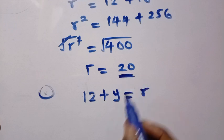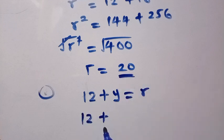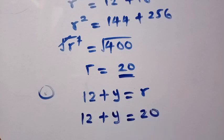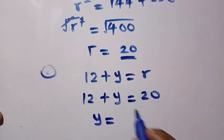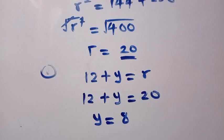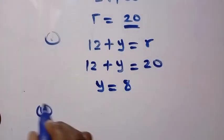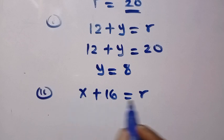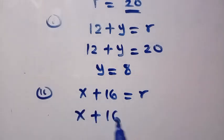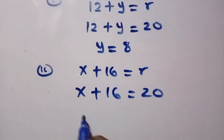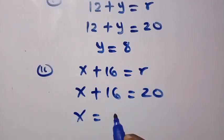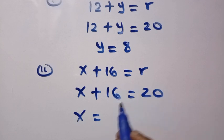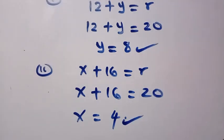For the first equation: 12 plus y equals r, and since r equals 20, we have 12 plus y equals 20, so y equals 8. For x: x plus 16 equals r, which is x plus 16 equals 20, and subtracting 16 we get x equals 4. So x equals 4 and y equals 8, and that is how to solve this problem.